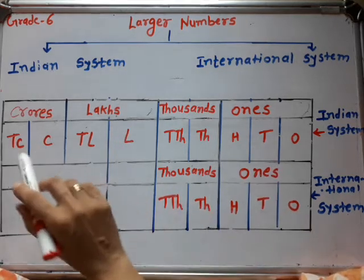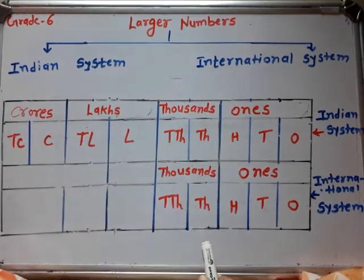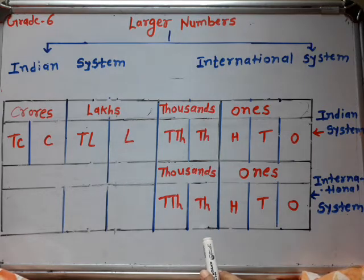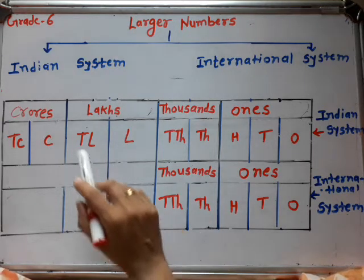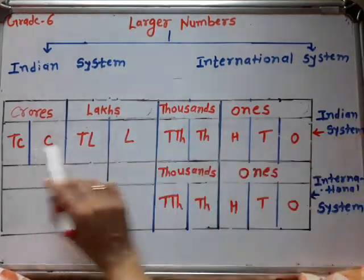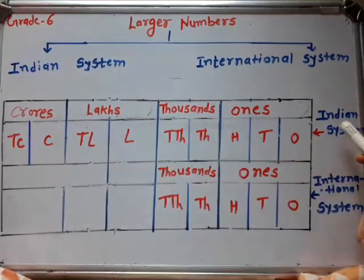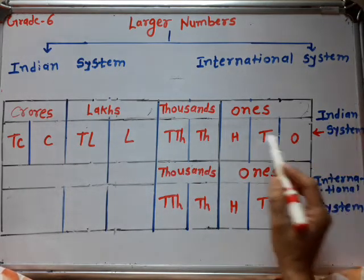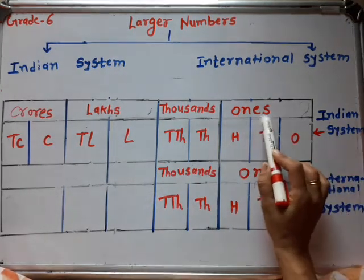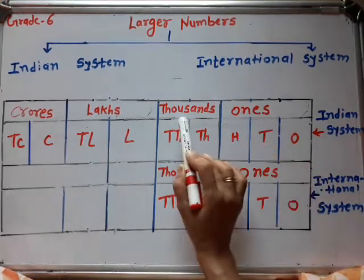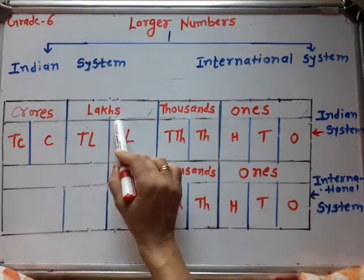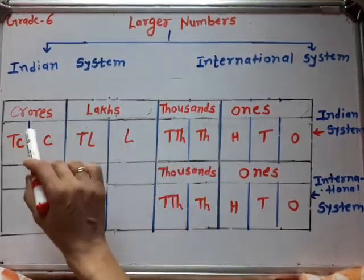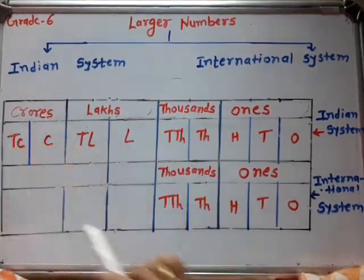Now, let's see what is the difference between the Indian place value system and the international place value system. In the Indian system, the first row has the ones period, then thousands period, then lakhs period and crores period.